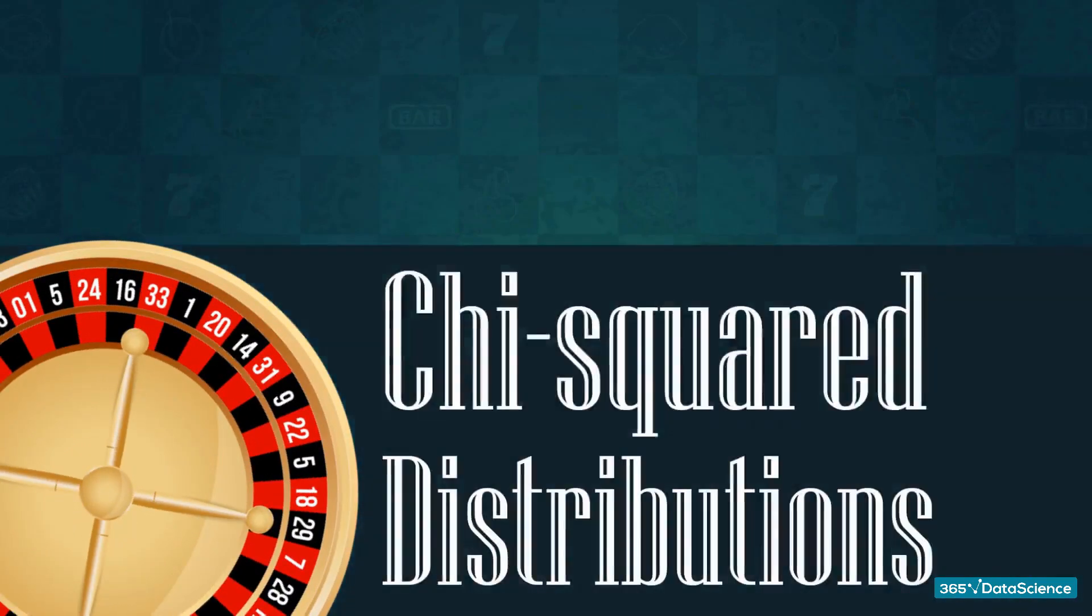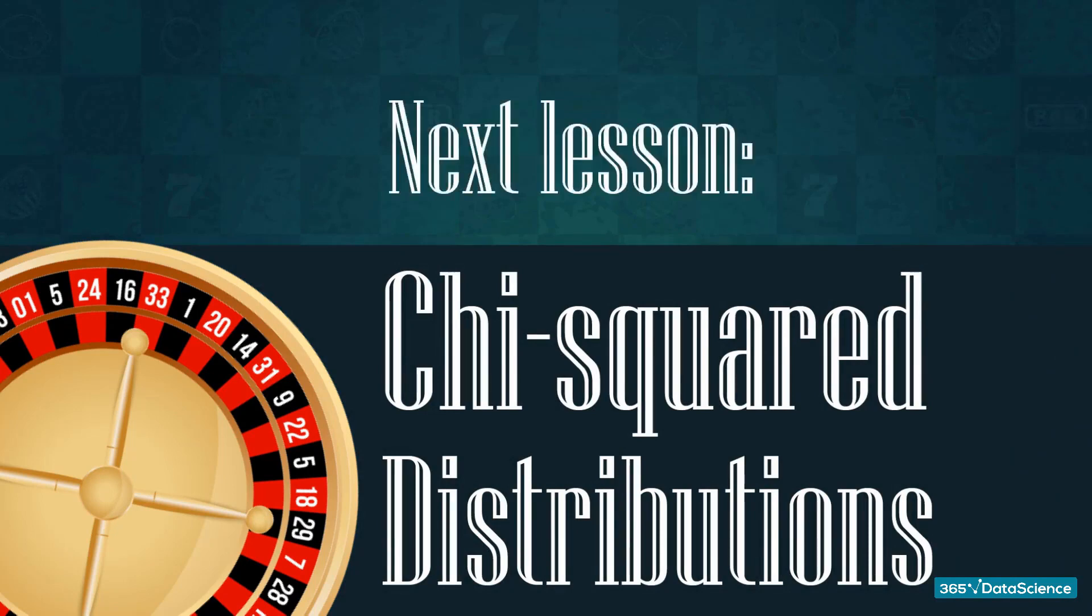Another distribution that is commonly used in statistical analysis is the chi-square distribution. In the next video, we will explore when we use it and what other distributions it is related to.